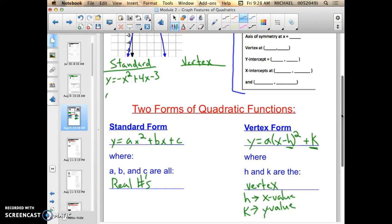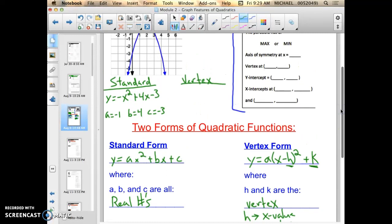So I can put that a equals negative 1, b equals 4, and c equals negative 3. That's an important piece of information to know, and you should be able to identify the a, b, and c if given a standard form of quadratic function. Now the vertex form of this same quadratic function, the picture in blue up here, the parabola,